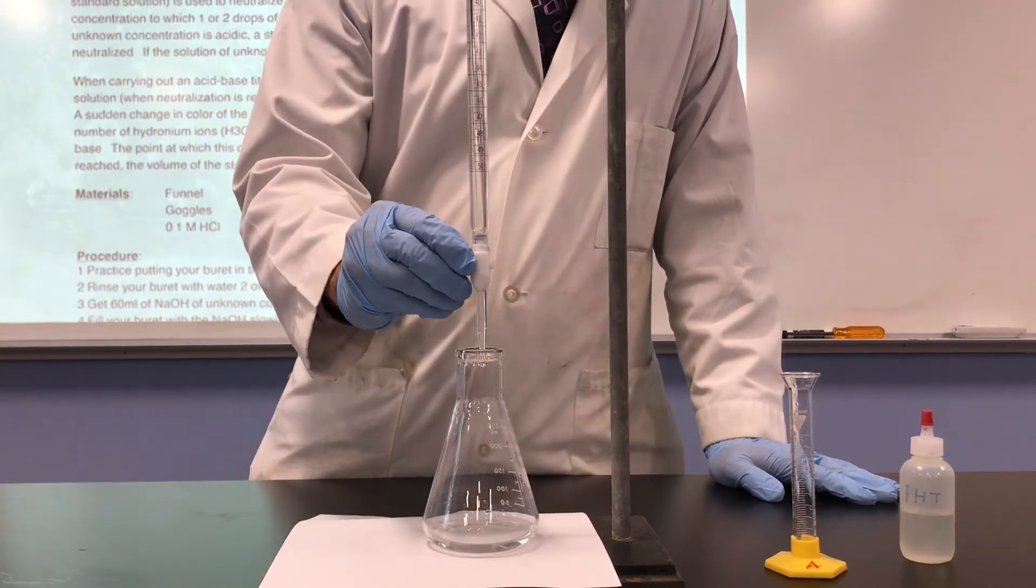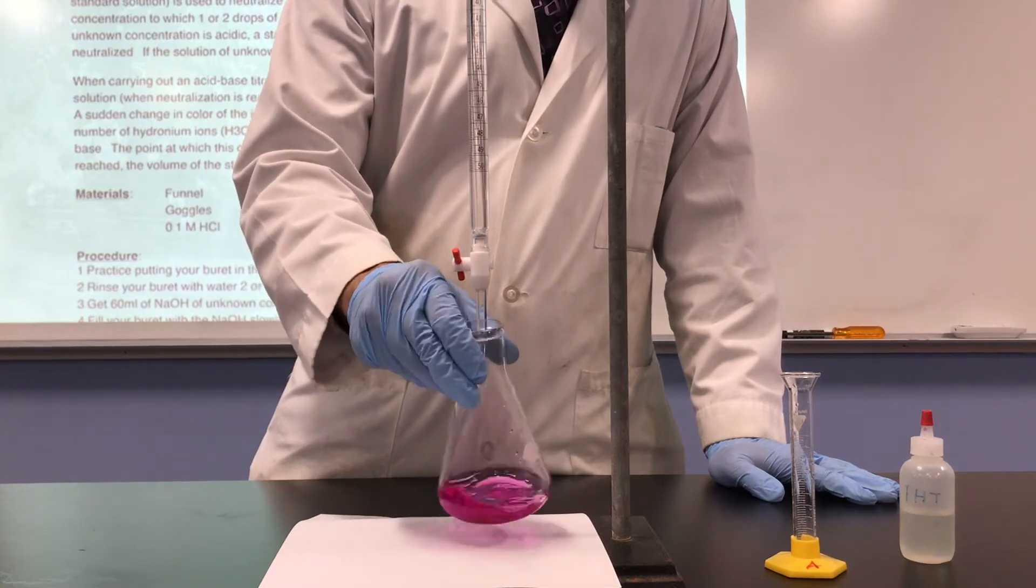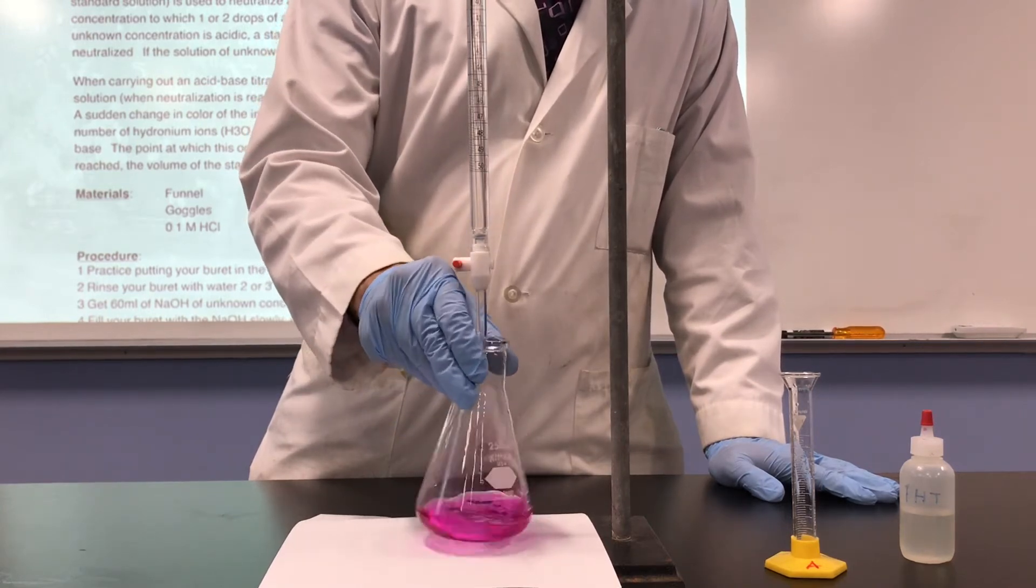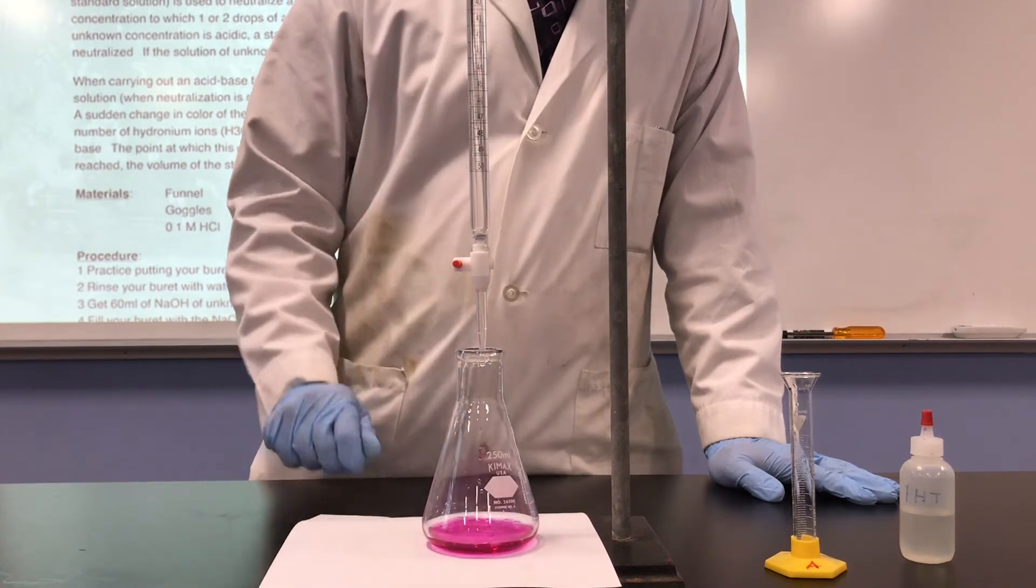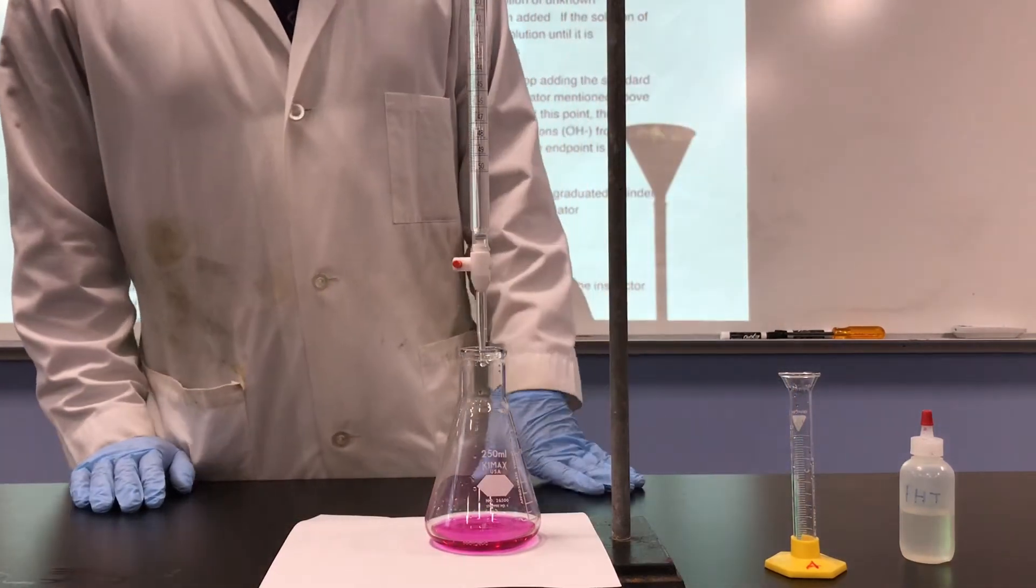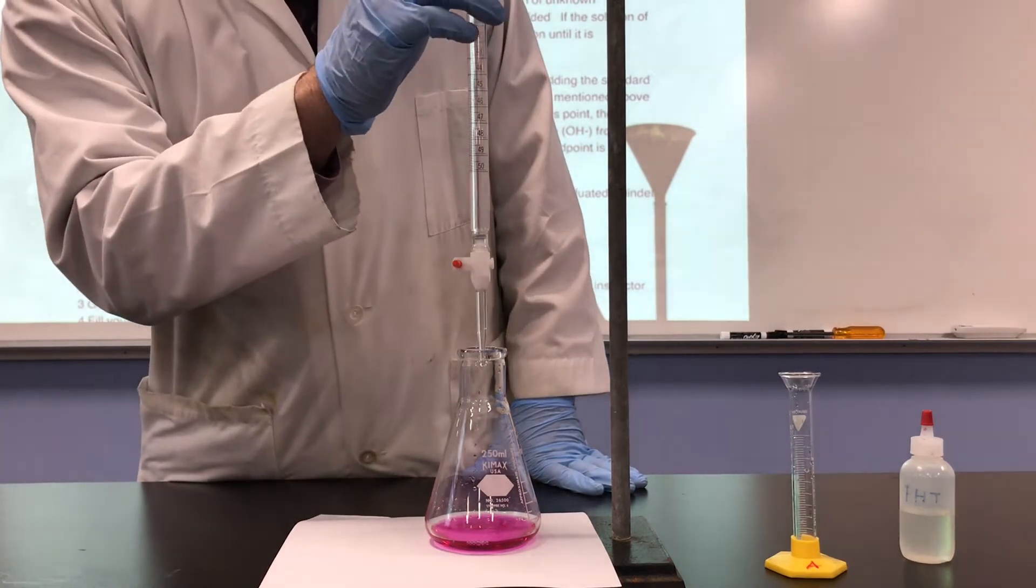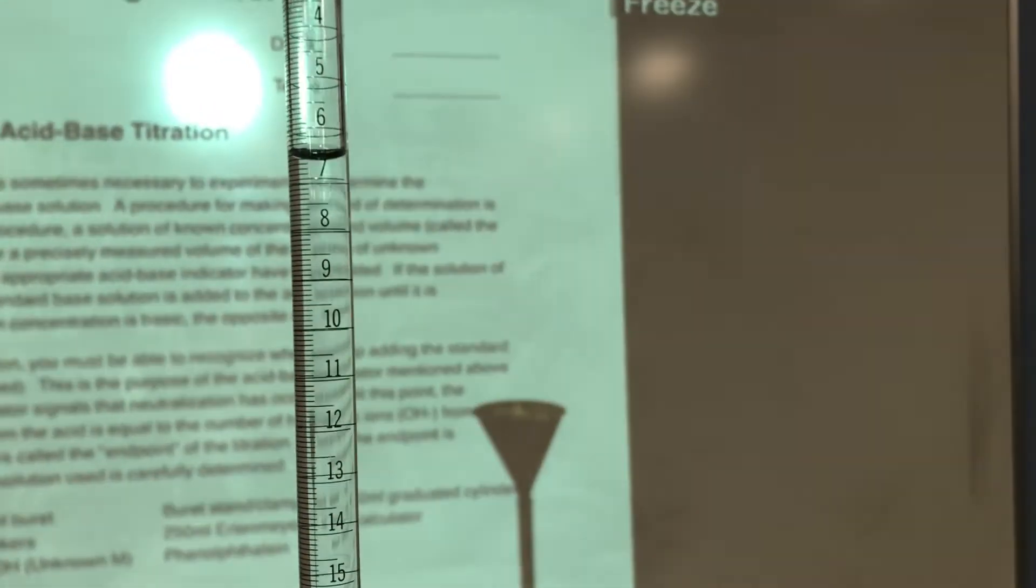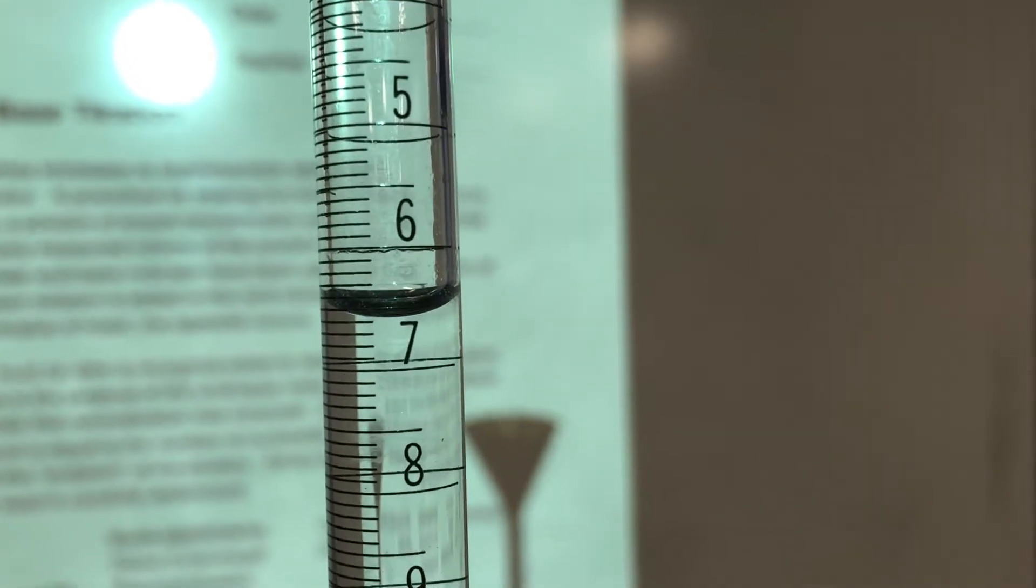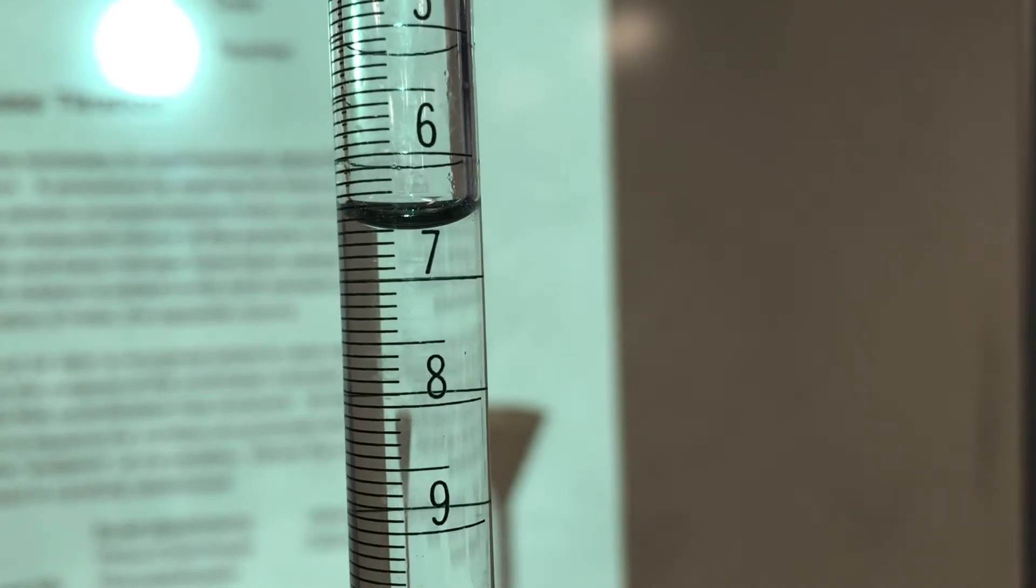So it stayed a little bit pinker for a little bit longer. So we're getting closer to our end point, and it looks like we just reached our end point. One extra drop turned us very pink. So we'll take a note of the reading, and then we'll be a little bit more careful next time. We'll slow down when we get closer to that number. After the first trial, we can see that we used 6.7 milliliters of base. 6.7 milliliters of NaOH in trial one.